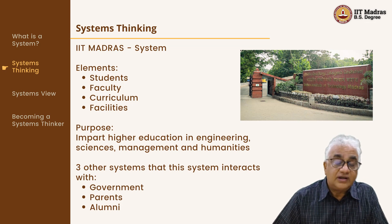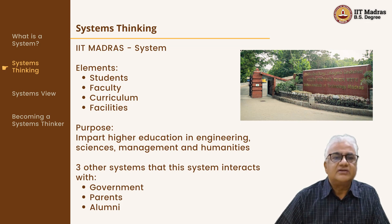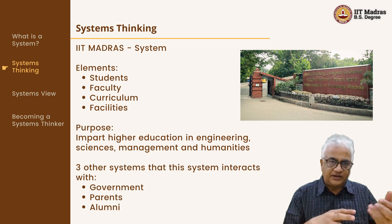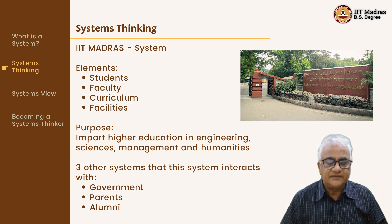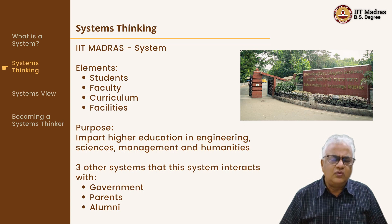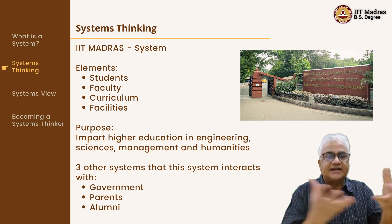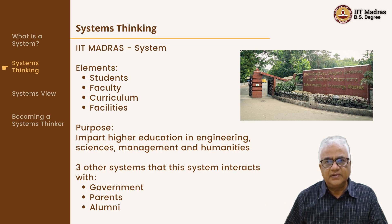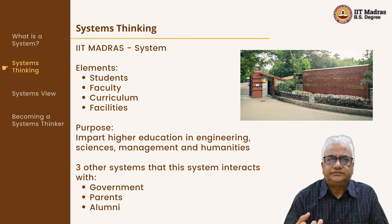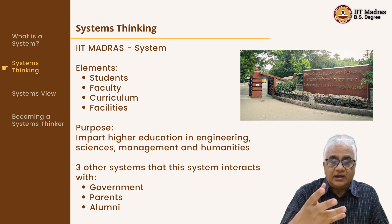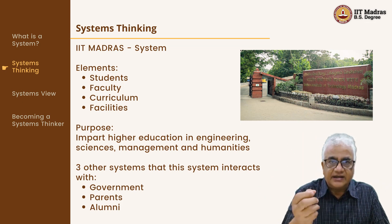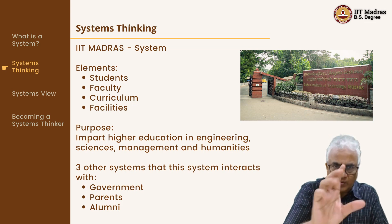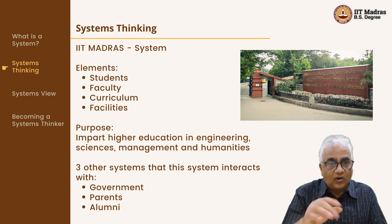What are the other systems the IIT system interacts with? The government system, because the government and IIT are interlinked. Parents, because parents send their kids to IIT Madras — the parent system and IIT Madras system get interlinked. Alumni — IIT has a huge alumni list and the alumni interact with the IIT system. The transportation around IIT, and the corporation that supplies water, etc. Suddenly you find that picture is actually made up of several elements, all of them interconnected.